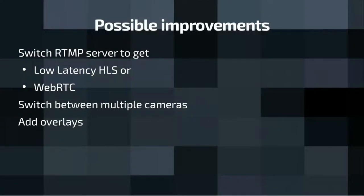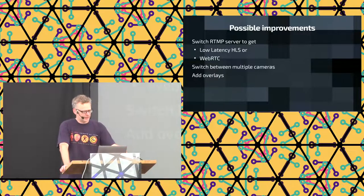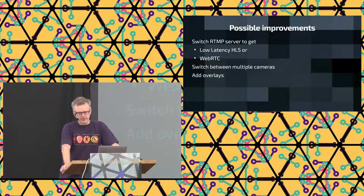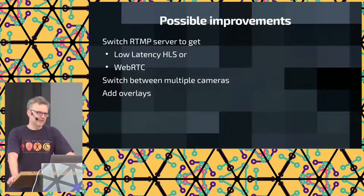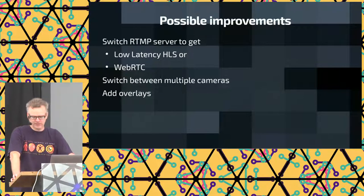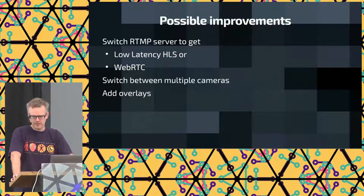Some possible improvements — besides the fact that the stream stopped — is to switch the RTMP server to get low latency HLS. And also, depending on your audience, if you have a small audience you can use WebRTC instead of HLS, which means much lower latency — less than one second mostly. But it doesn't really scale. If you have tens of clients, WebRTC is definitely a very interesting option, and OvenMedia also supports WebRTC.